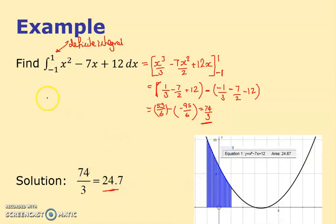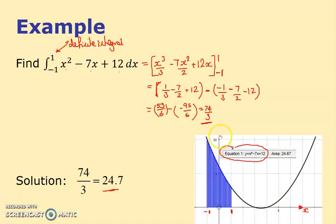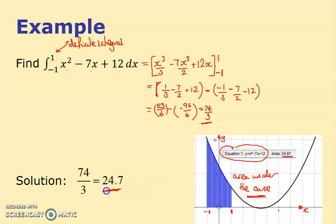Notice what the picture looks like. The graph of y equals x squared minus 7x plus 12 is drawn. The definite integral with limits 1 and minus 1 is shown — the software has colored in between minus 1 and 1 on the x-axis, shading underneath the curve down to the x-axis. We sometimes describe this as the area under the curve. It's interesting that the shaded area matches our calculated answer of 74 over 3, approximately 24.7.